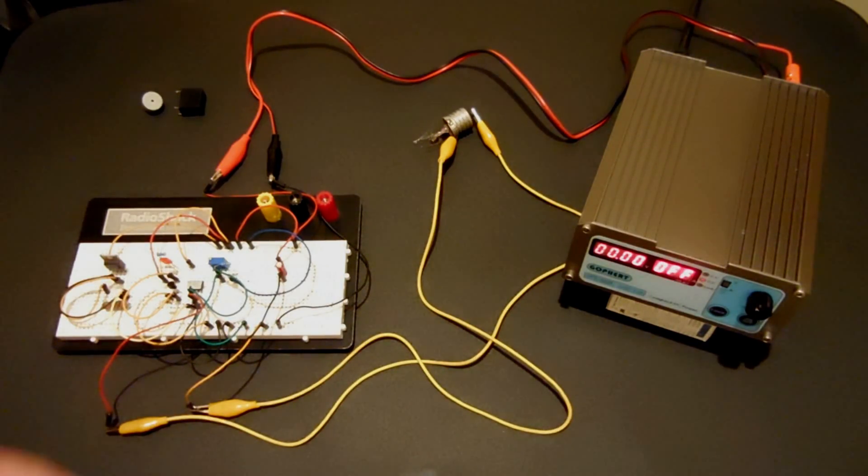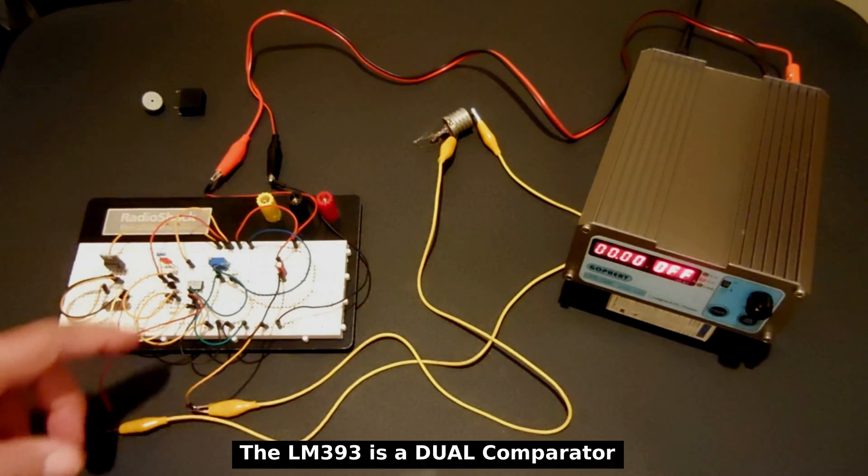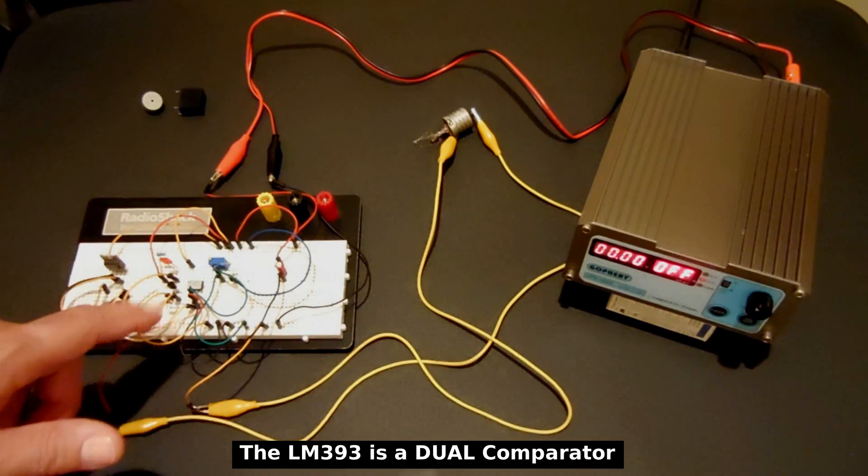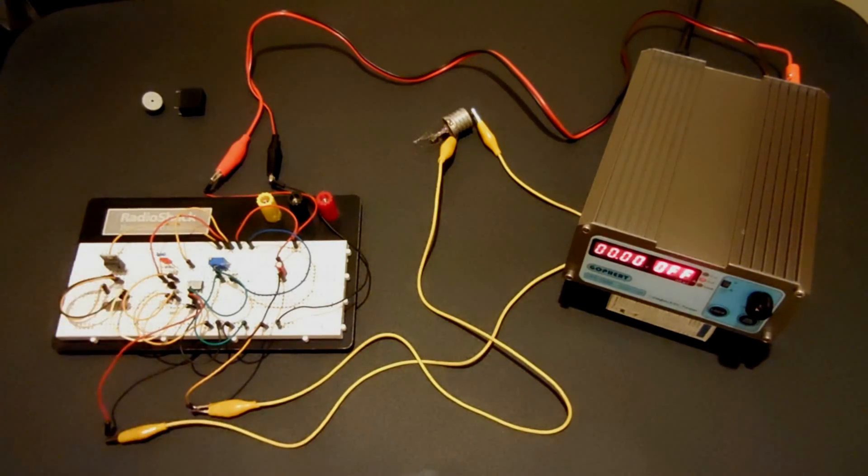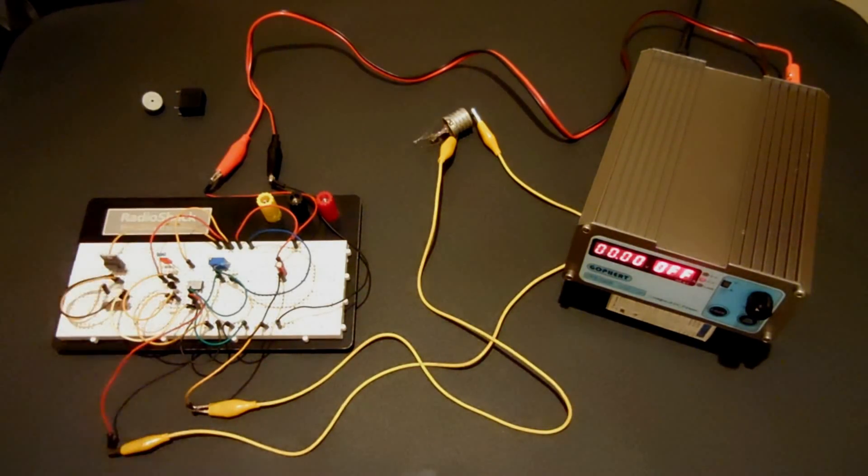The circuit is built around an LM393 integrated circuit as a comparator. On this IC, pin 1 is the output, pin 2 is the negative input, and pin 3 is the positive input. Pin 4 goes to ground and pin 8 goes to the positive rail. This circuit operates using 12 volts DC.